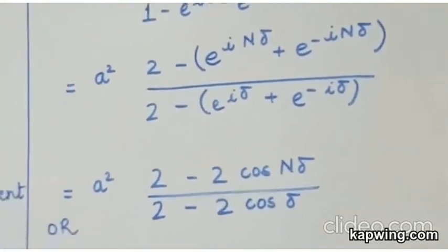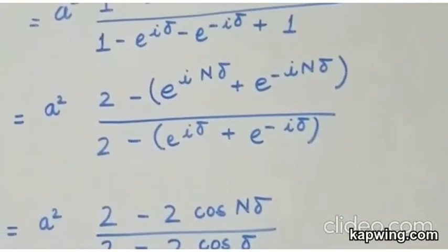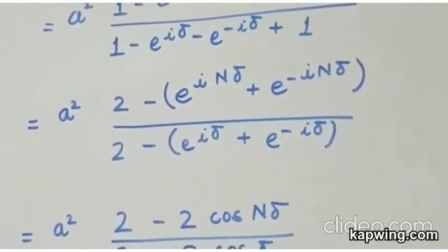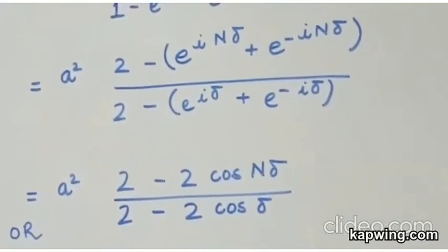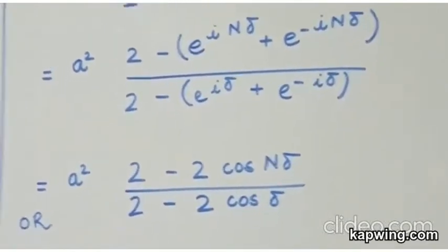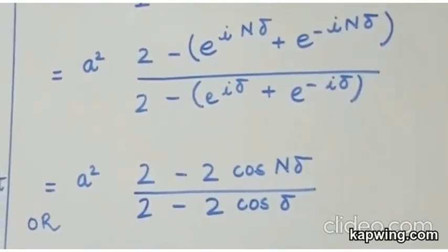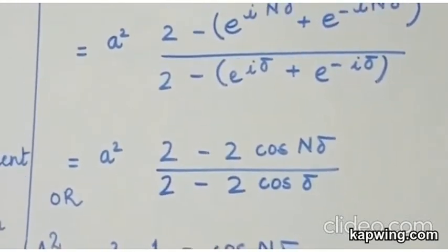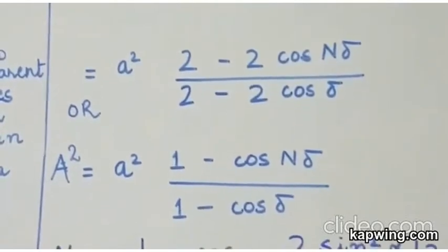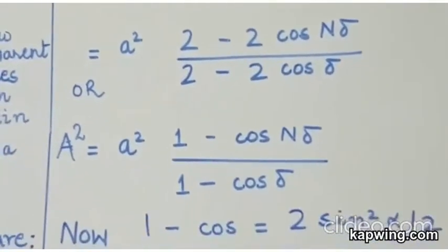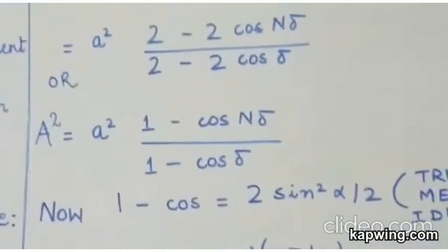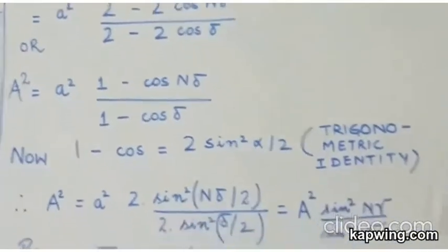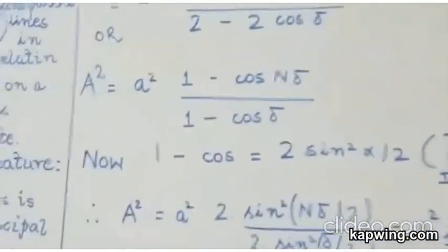You know trigonometrically that e to the i theta plus e to the minus i theta is simply equal to 2 cos theta. So you can write down the expression within the numerator brackets as 2 cos n delta. Similarly the expression within the denominator brackets can be written as 2 cos delta. So you have the resultant expression for A square as A square is equal to A square 1 minus cos n delta upon 1 minus cos delta. Further utilizing the trigonometric identity that 1 minus cos delta, there should be a delta here. My bad. Just a minute. Please give me some time.